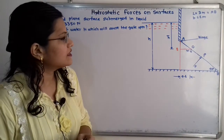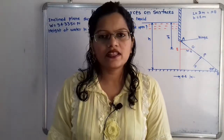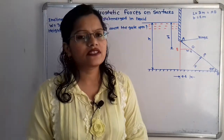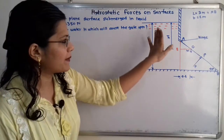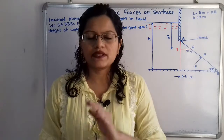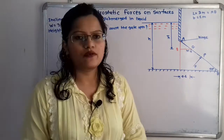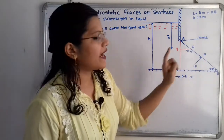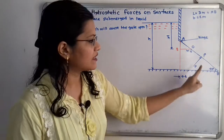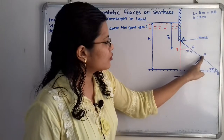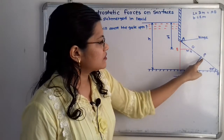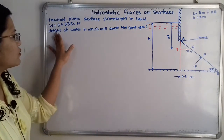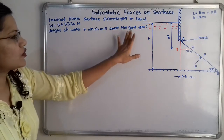This gate AB is in contact with the water, so there is a force getting applied by the water on gate AB. We have to calculate the total pressure, or total force F, applied by the water on the surface of gate AB. This force F acts in the perpendicular direction to the inclined gate AB, and its point of application is point P. We have to find the height of water H which will cause the gate to open.